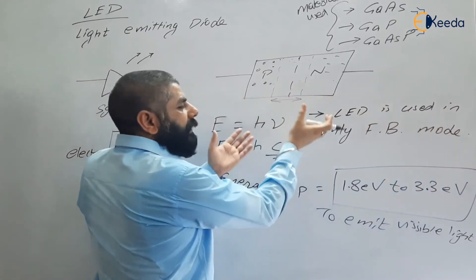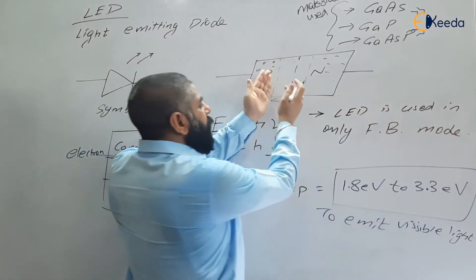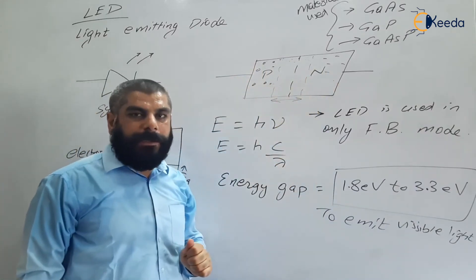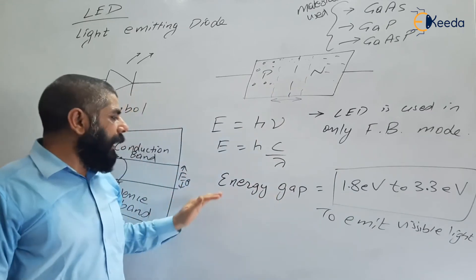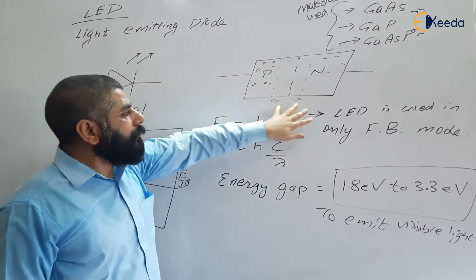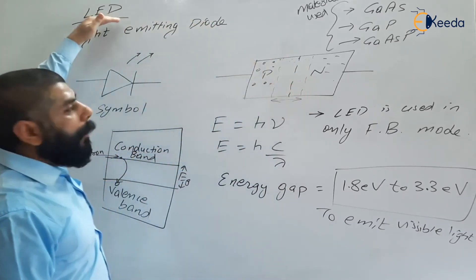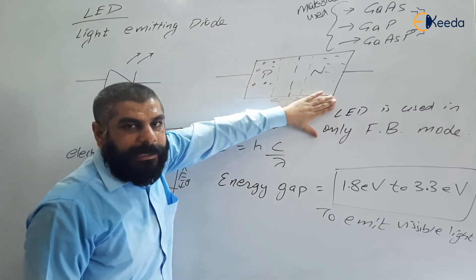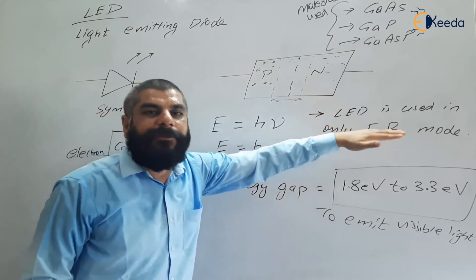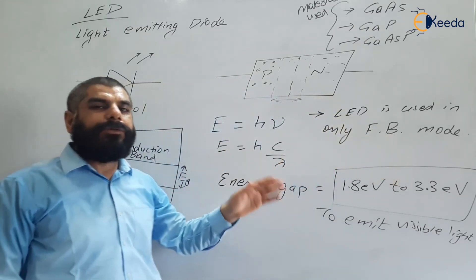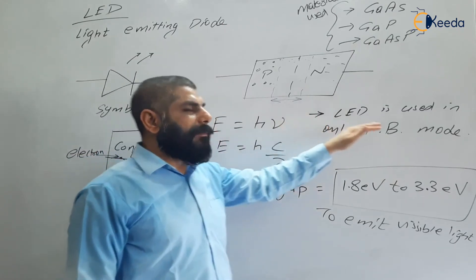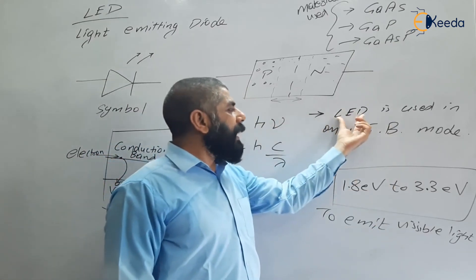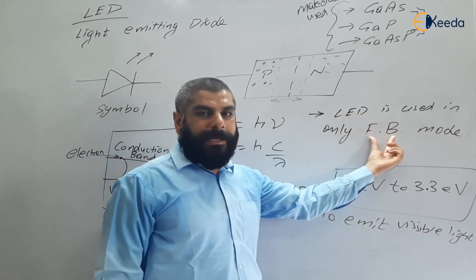If an LED is used in reverse bias, the depletion width will increase, so electron-hole pair recombination will never occur and no light will be emitted. Therefore, an LED must always be operated in forward bias. This was also asked in a 2019 exam question. Remember: LEDs are always operated in forward bias mode, whereas photodiodes are always used in reverse bias mode — we will discuss why when we cover photodiodes.